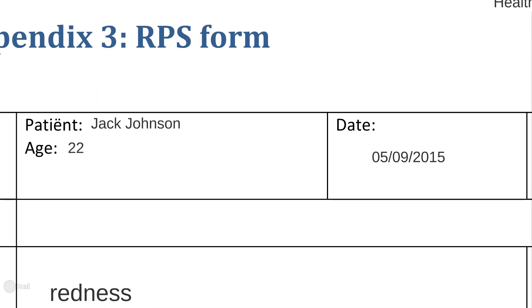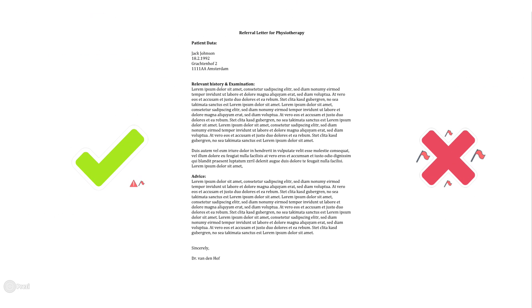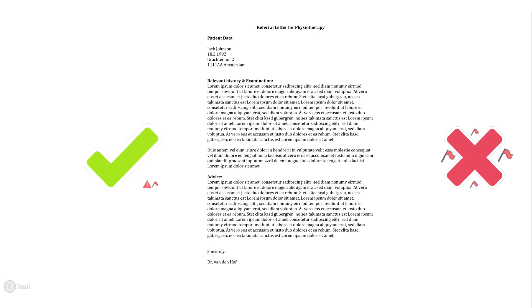Start with administration — fill in the name and age of your patient as well as the date. It's important to know whether your patient has a referral from a GP or if he's coming through direct access. If the patient has a referral from his doctor, he was most likely screened for red flags and his doctor gave the indication for physiotherapy.